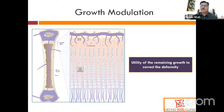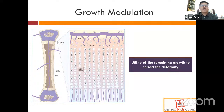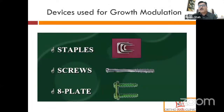Growth modulation is not a new concept. In the 1700s, Femister started this by destroying the physis on one side, so the opposite side would keep on growing. But due to that, it was used only in patients near skeletal maturity. Growth modulation by definition is the utility of remaining growth to correct the deformity. In the current era, there are three ways to do growth modulation: staples to induce hemi-epiphyseodesis, percutaneously placed screws, and tension band plates or eight plates.